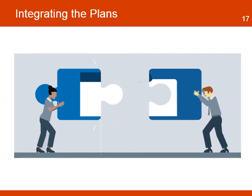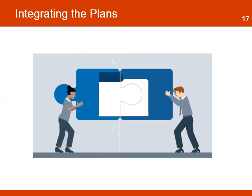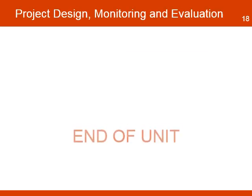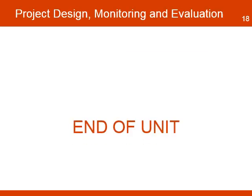Once a team completes the development of the managing plans, they need to be integrated with the monitoring and evaluation plan in order to ensure that the activities of both plans are done in a coordinated fashion. Failure to do so might result in plans that are being implemented at different times and provide information that will be difficult to reconcile. It is a responsibility of the project manager to make sure that the integration of all project plans happens before the implementation phase.